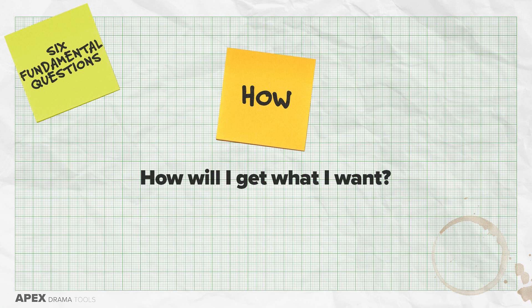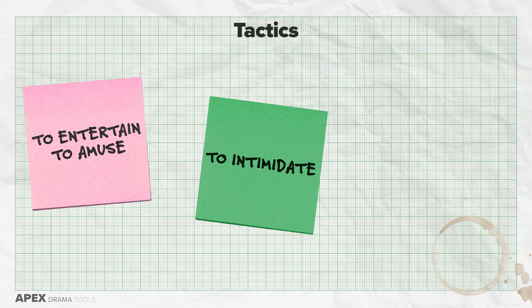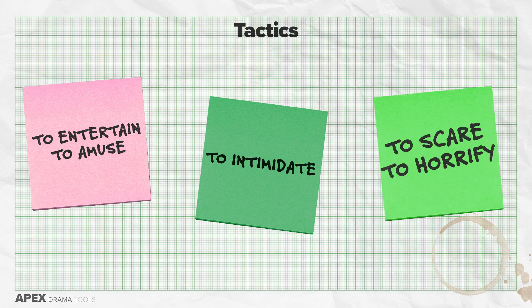How is the sixth question, and this means: how will I get what I want? Here you need a tactic — something to do to the other person to get what you want. Some example tactics are to entertain and amuse, to intimidate, to scare or horrify them. Your tactics are likely to be nuanced and shifting throughout a scene. You may want to add a few tactics your character employs and add more later, or add each tactic to the specific part of the script where your character is employing it.